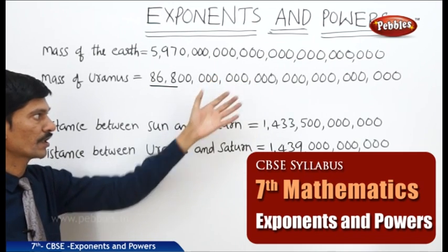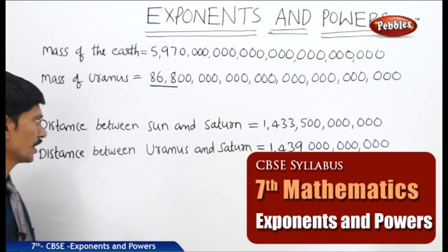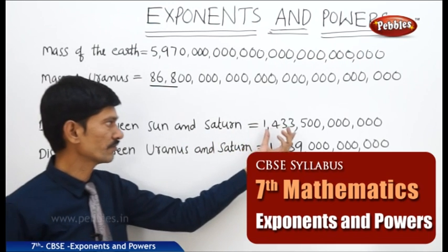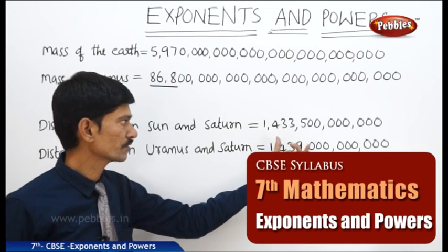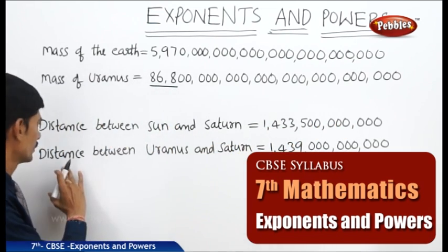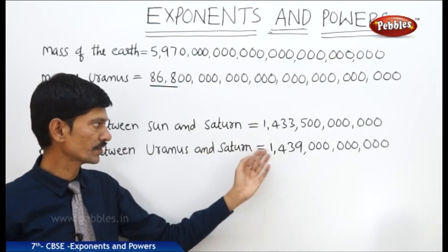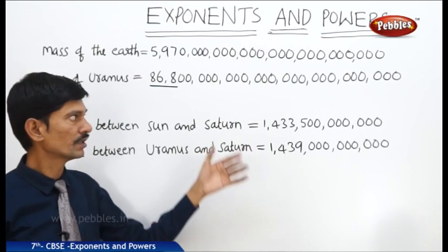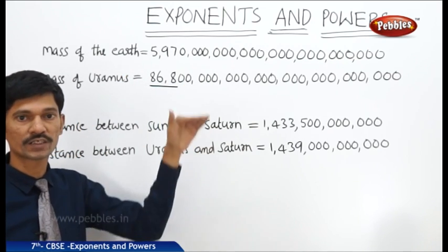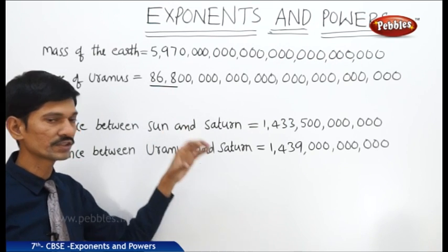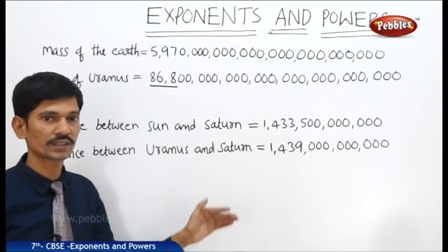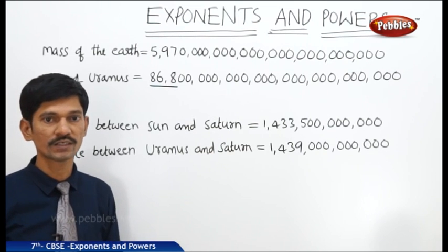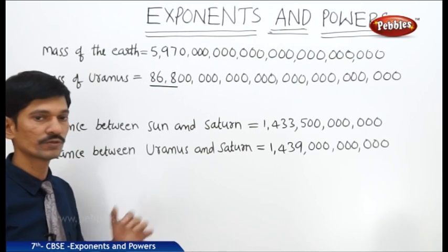These large numbers are difficult to understand, compare, and operate — meaning addition, subtraction, and other basic operations. For example, the distance between the Sun and Saturn has 8 zeros after 14335, and the distance between Uranus and Saturn has 9 zeros after 1439. So which distance is larger or smaller, and which planet has greater mass? We cannot compare easily.